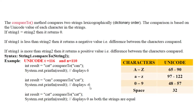Here is the Unicode reference table: uppercase letters A to Z range from 65 to 90; lowercase letters a to z range from 97 to 112; digits 0 to 9 range from 48 to 57; and the space character has a Unicode value of 32.